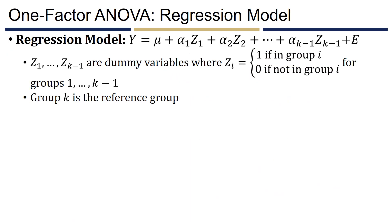Setting up the regression model in one-factor ANOVA differs slightly from multiple regression. On the left we still have y, the actual value of the response. On the right, mu replaces beta-naught and represents the mean of the reference group. We add alpha_1 times z_1 through alpha_{k-1} times z_{k-1}, where the alphas replace the betas as regression parameters, and the z's are dummy variables equal to 1 if the observation comes from group i, and 0 otherwise. Group k acts as the reference group.